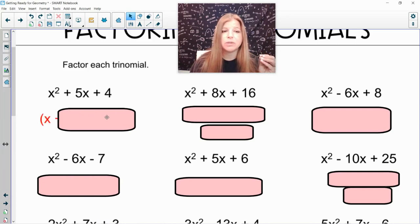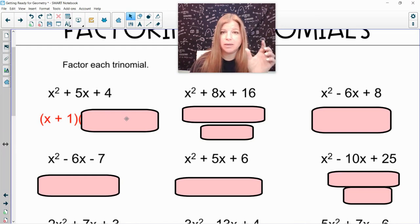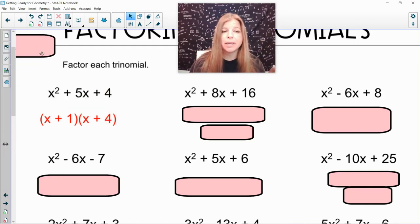So in factored form this is going to look like (x + 1) in one binomial times the other binomial (x + 4). Now it does not matter what order I write them in. (x + 4) can go first and then times (x + 1), it means the same thing because again remember we know that multiplication is commutative. Order doesn't matter.